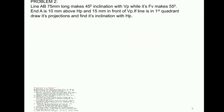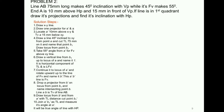Now we have a second question. Line AB is 75mm long — this is the true length A'B1' equals AB1 equals 75mm. The line makes a 45-degree inclination with VP. So phi is 45 degrees. While its front view makes a maximum of 55 degrees, meaning alpha is 55 degrees.